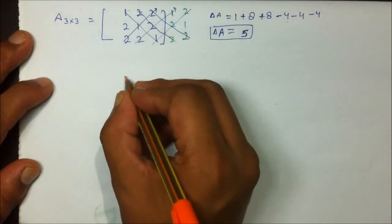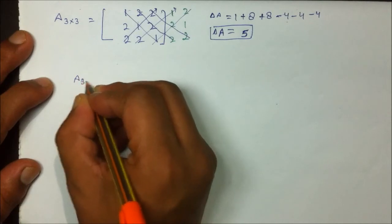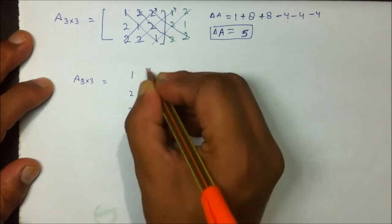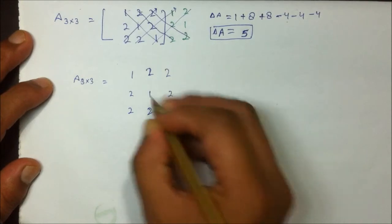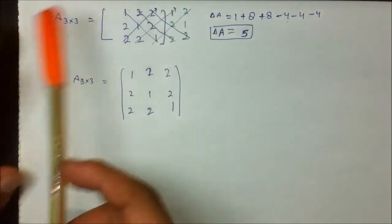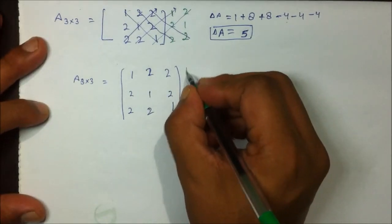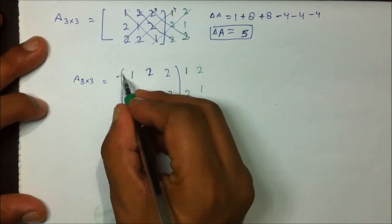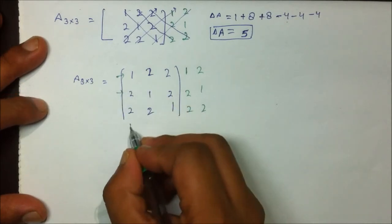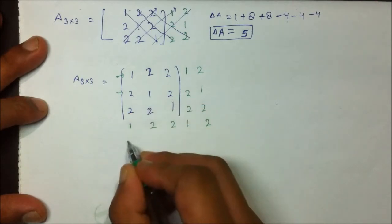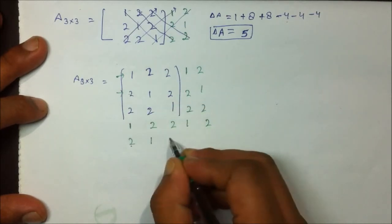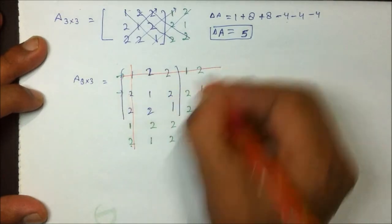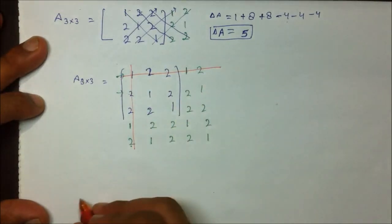To find the inverse, I write down the same 3×3 matrix: [[1, 2, 2], [2, 1, 2], [2, 2, 1]]. I copy two columns to the right and also copy two rows at the bottom, then exempt those two extra rows. A inverse equals one over the determinant, which is one-fifth, times the cofactor matrix.